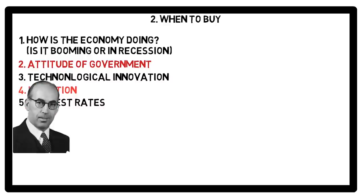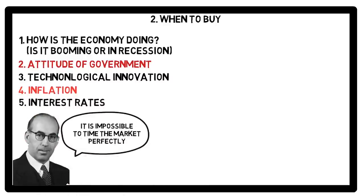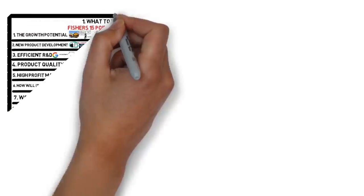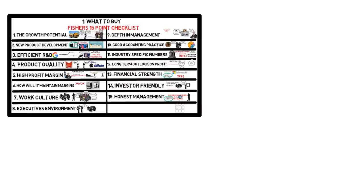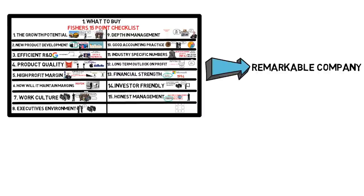Fisher says that it is humanly impossible to accurately time the market assessing all these factors at a particular time, though these factors sound highly economy related. But there is also a quote which goes like, if economists could predict what stock market is going to do, they would have been the richest people, which is not the case. Once you find such a company which satisfies most of the points in the 15-point checklist, Fisher says such a company is a remarkable one.